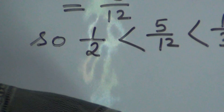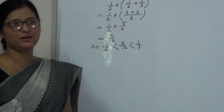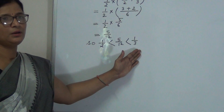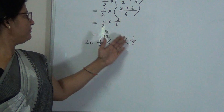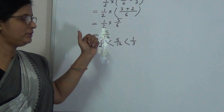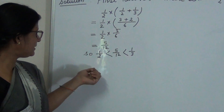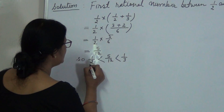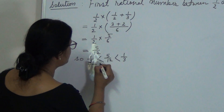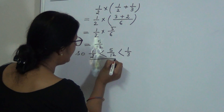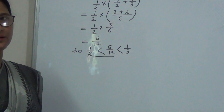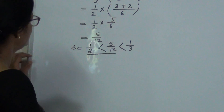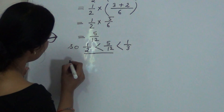Now we have got to find 2 more rational numbers in between 1/2 and 1/3. One we have already found. The next one can be found in between 1/2 and 5/12.